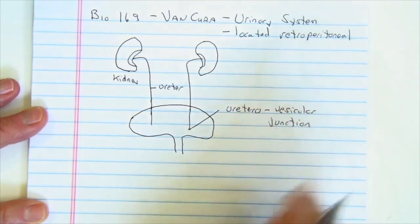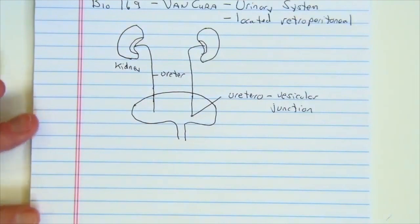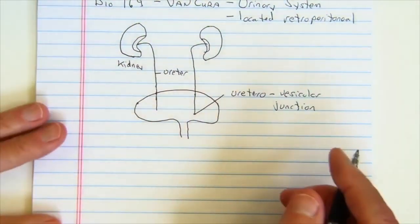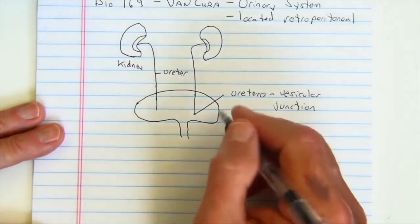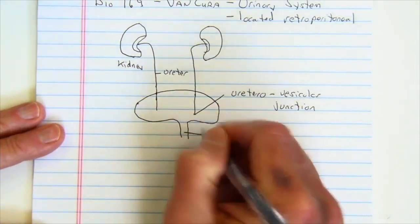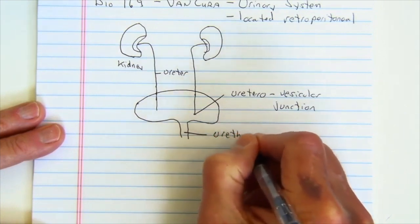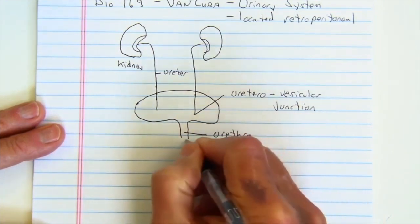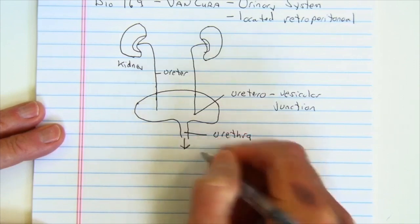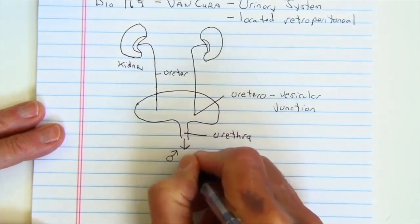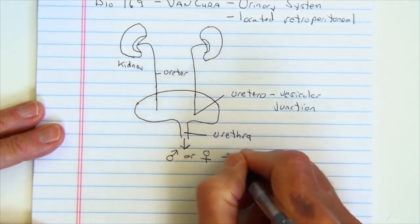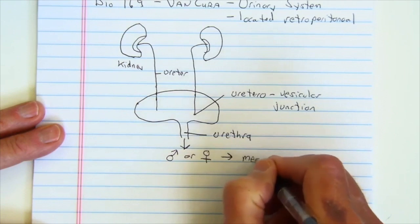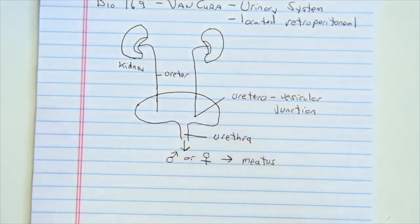The bladder is a very common place for males to develop cancer because of the transitional epithelium of the bladder. It's then going to pass into the urethra, and then the urine will flow out whether it's male or female.